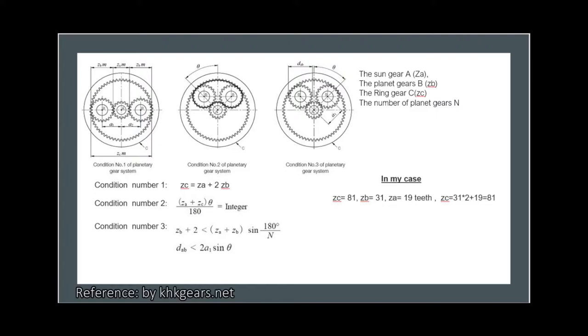The sun gear, ring gear, and carrier have a common axis. In order to determine the relationship among the number of teeth of the gears, these parameters must satisfy the following three conditions.